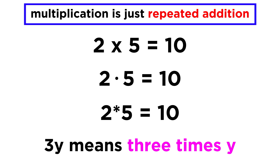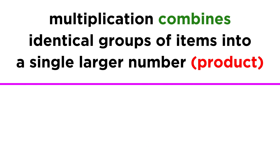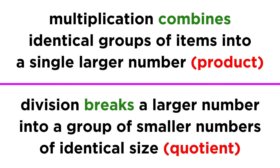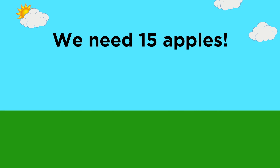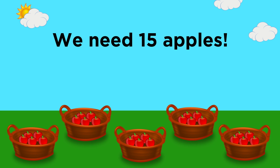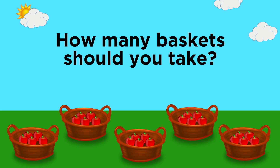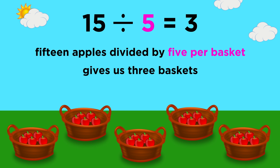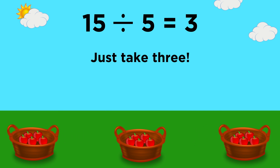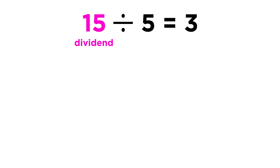So if multiplication solves the problem of how to combine several identical groups of items into a single larger number, or a product, then division, as the inverse operation of multiplication, does just the opposite — it can break a larger number into smaller ones. Let's say you want fifteen apples, and at the market there are baskets each containing five apples. How many baskets should you take? We simply divide fifteen by five per basket to get three, which means that three baskets will give us all the apples we need. Fifteen is the dividend, five is the divisor, and three is the quotient.